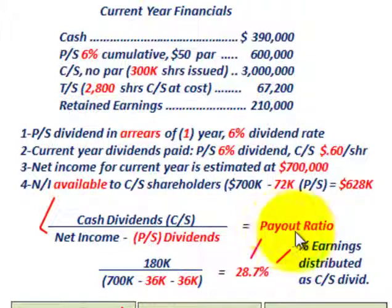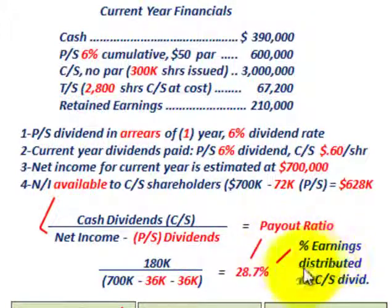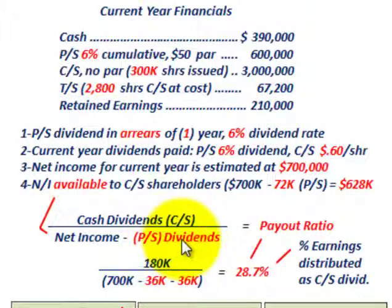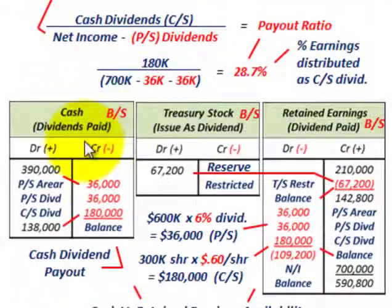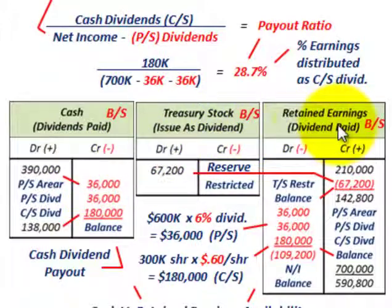The payout ratio represents the percent of earnings distributed as a common stock dividend. Everything is looked at in terms of common stock, where we reduce net income by the preferred stock dividends. We'll look at the cash account for the dividend payout, the retained earnings account where dividends are paid, and the treasury stock account.